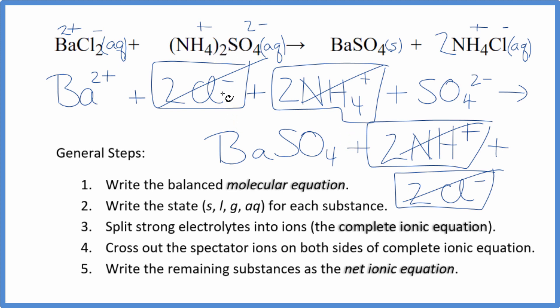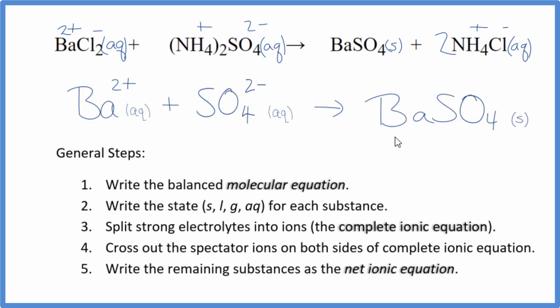Let me clean this up. We'll write the states in, have our net ionic equation. So this is the balanced net ionic equation for barium chloride plus ammonium sulfate. You'll notice that charge is conserved. I have a 2+ and a 2-. That gives me a net charge of zero here in the reactants. This is a neutral compound, net charge of zero. Atoms, they're balanced as well.